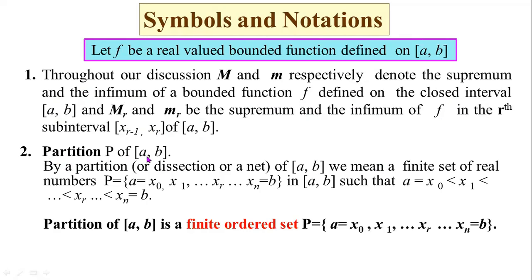Partition of the closed interval [a, b]: by a partition, or dissection, or net of [a, b], we mean a finite set of real numbers P = {x_0, x_1, x_2, ..., x_r, ..., x_n}, where x_0 = a and x_n = b, such that x_0 < x_1 < x_2 < ... < x_r < ... < x_n.